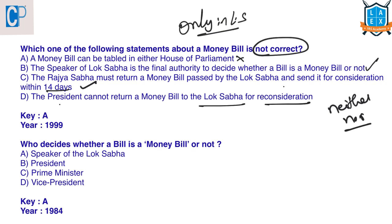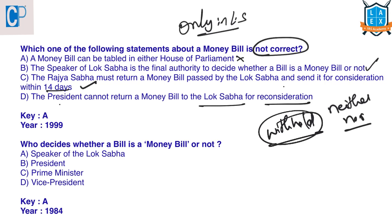After both houses, the money bill goes to the President. The President can withhold assent but cannot return the bill for reconsideration to Lok Sabha. In case of any difference of opinion between Rajya Sabha and Lok Sabha, there will be no joint sitting held for money bills, because the opinion of Rajya Sabha is immaterial — Lok Sabha's decision prevails. So the answer to the first question is A — 'a money bill cannot be tabled in either house of parliament' is incorrect, as it can be tabled only in Lok Sabha.